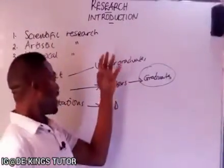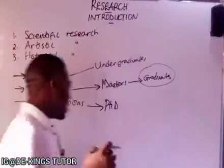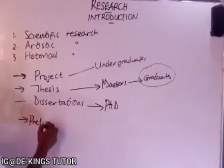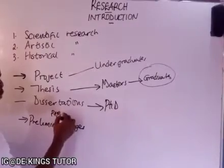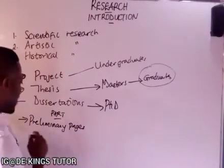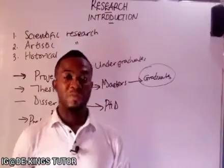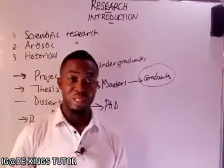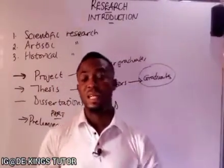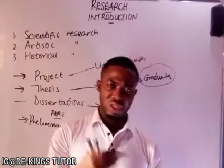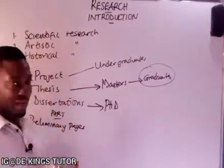Whichever of these — project, thesis, or dissertation — they all have three parts. The first part is called the preliminary pages. This first part consists of those things that come before the main body, including the title page, cover page, certification page, dedication page, acknowledgement, table of contents, and abstract. We are going to examine all of these in isolation in another video.